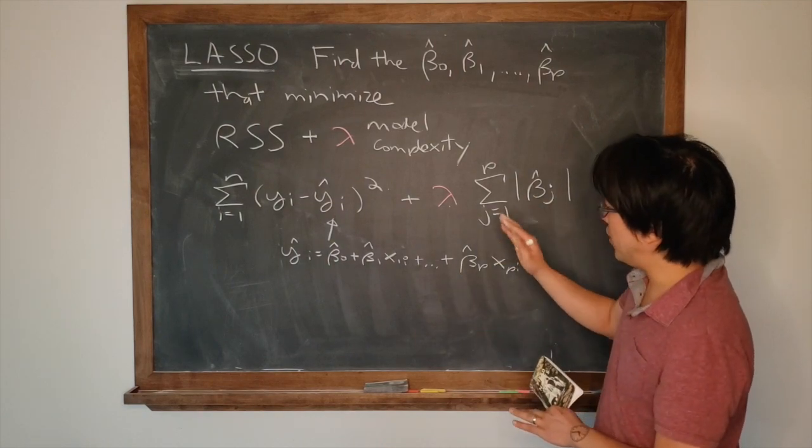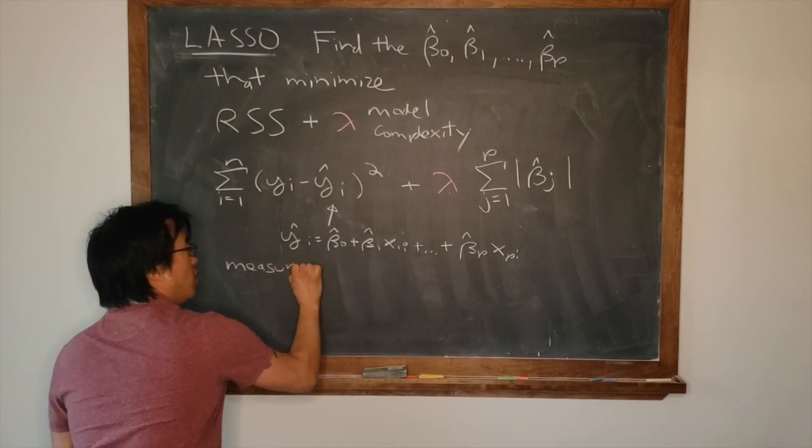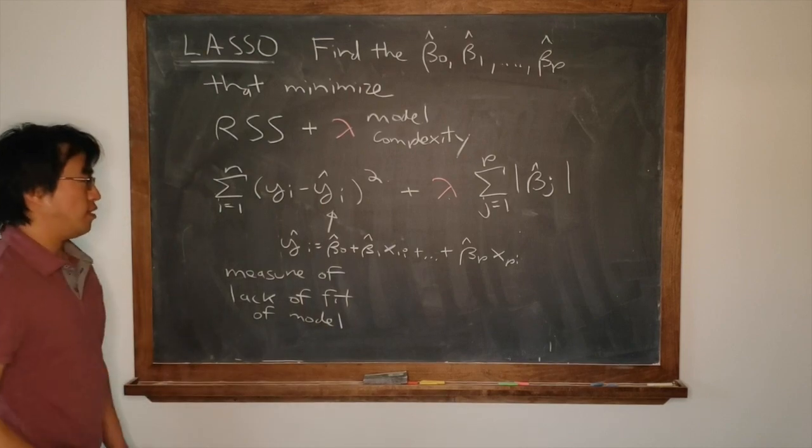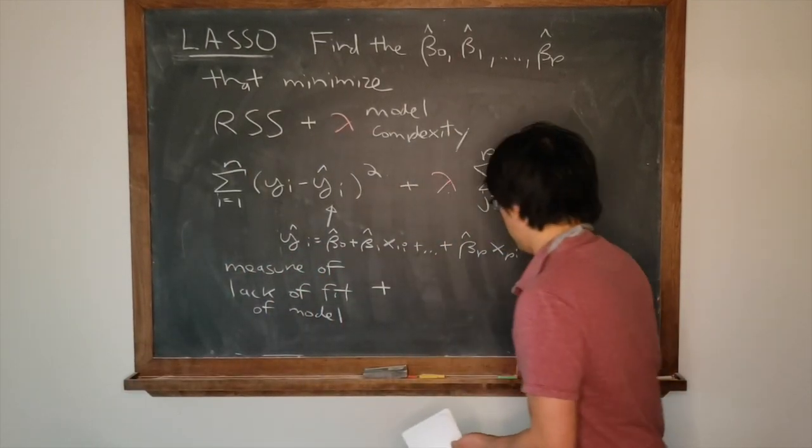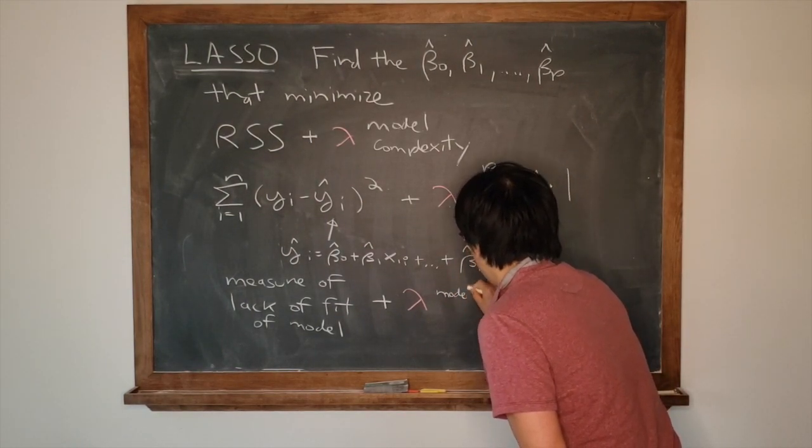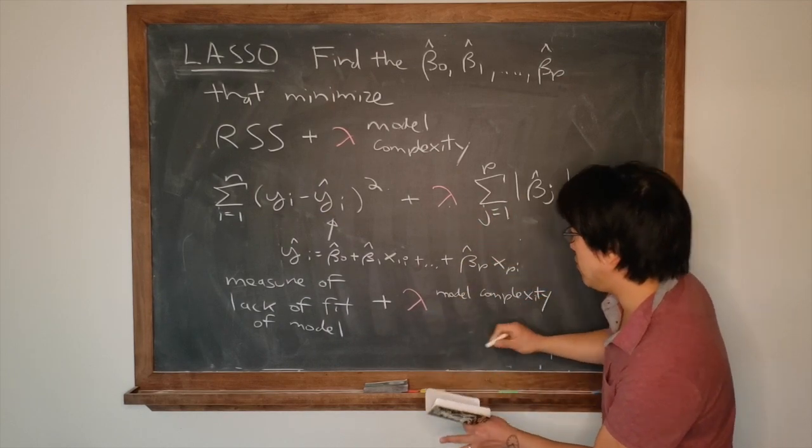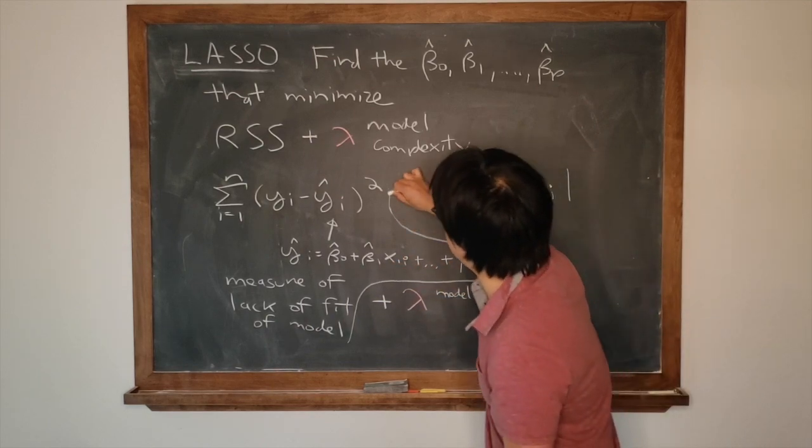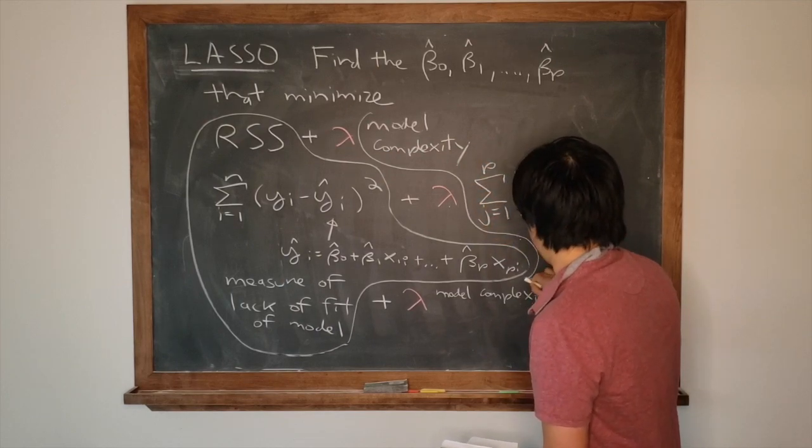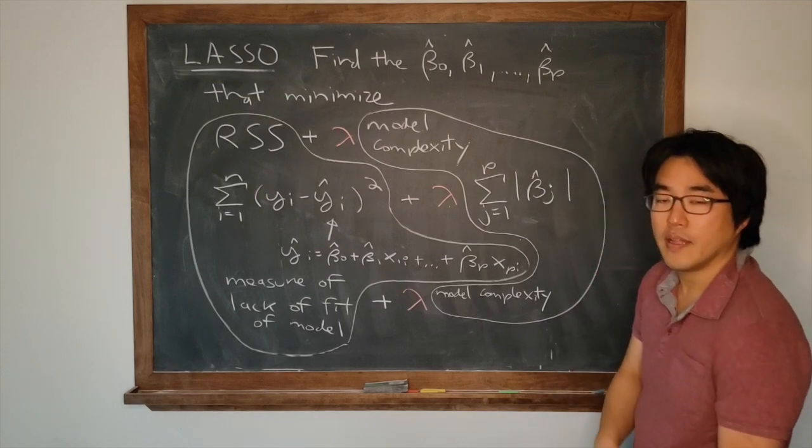So again, to build the intuition, what is this part here? This is a measure of lack of fit plus lambda, once again, it's a measure of model complexity. Let's carefully match up components. There's two things to note here.